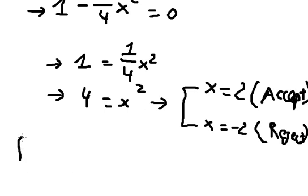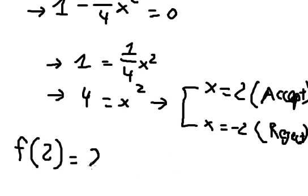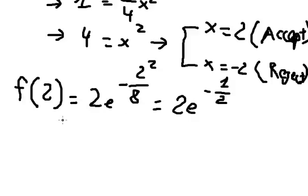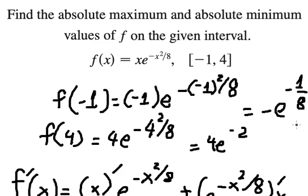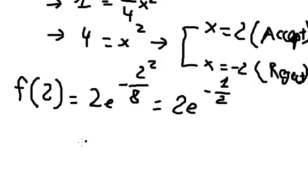Now we substitute s equals two into the function. So we have two e to the power of negative one over two. Now we go back and compare all values to determine which is the maximum and which is the minimum.